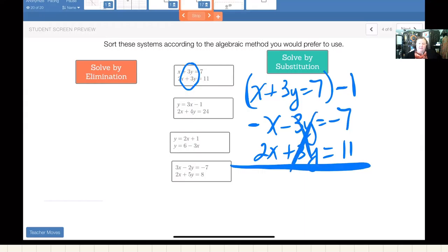And that's eliminated. Negative x plus 2x is going to give me an x. Negative 3y plus positive 3y gives me a 0. Negative 7 and positive 11 is 4. What does that leave me with? X equals 4.